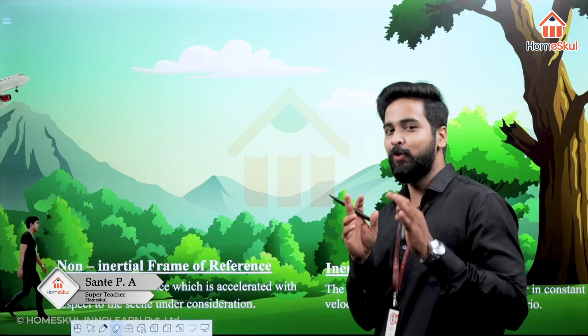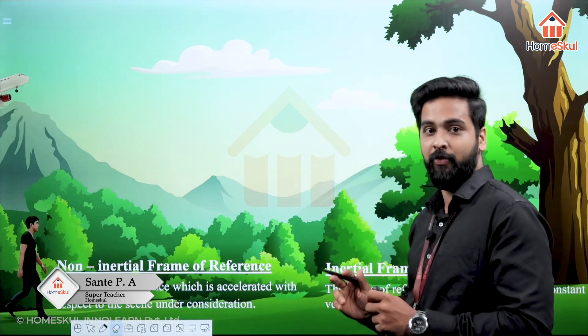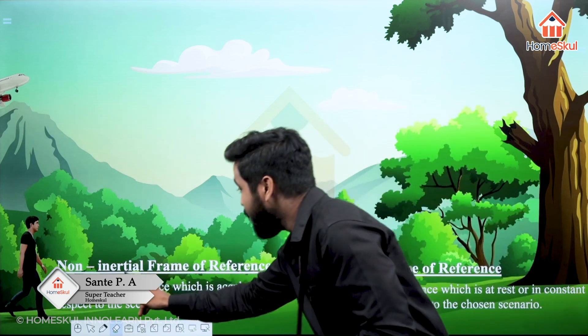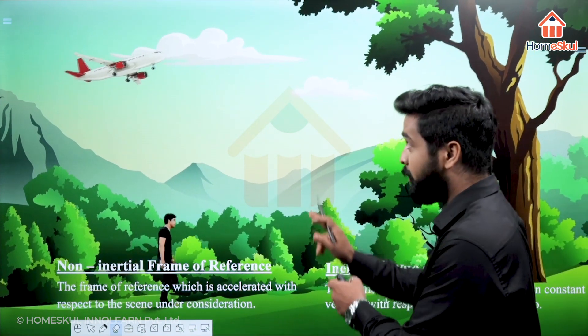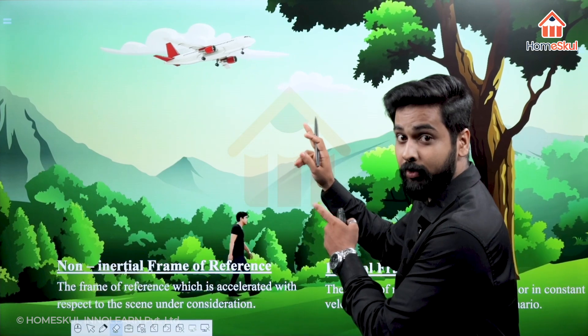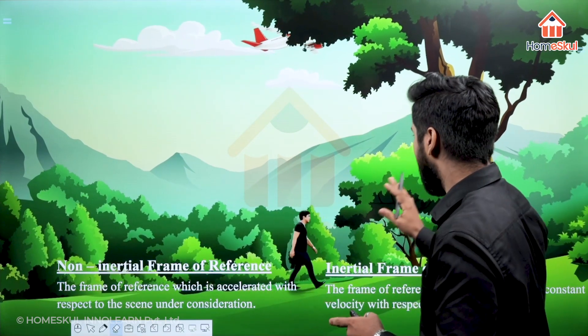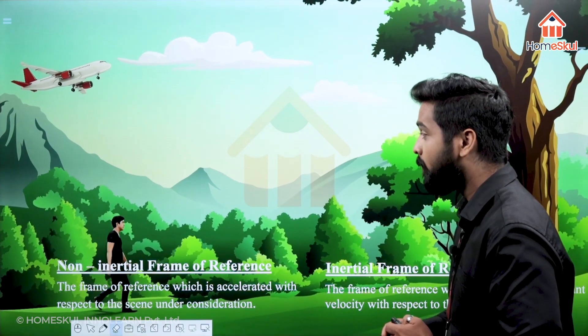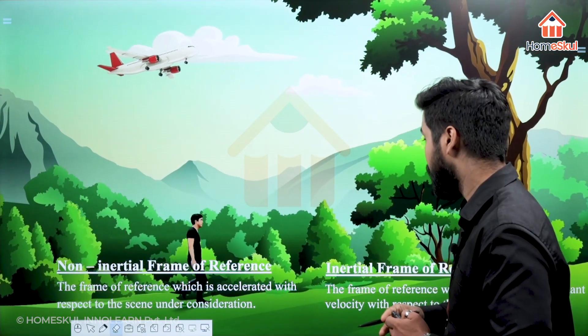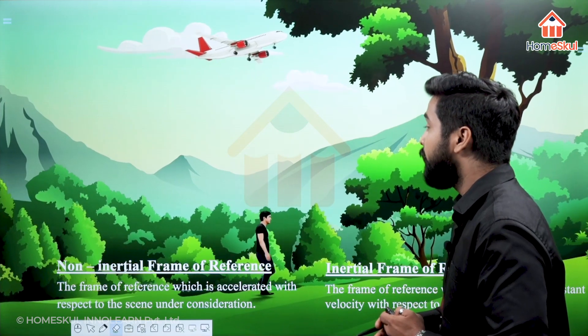We are moving on to an animated representation to show that motion is relative. That's the method to study the two different types of frame of reference: one is inertial frame of reference and the other one is non-inertial frame of reference. In the animated presentation, you can see a person who is walking over the ground, and there is also an aeroplane that is moving. The immediate surroundings are all in view.